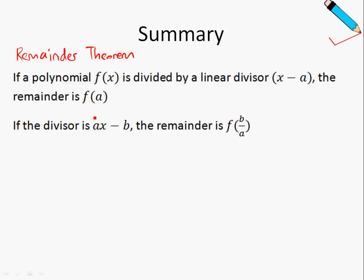If the divisor is ax-b, then the remainder is f(b/a). Let me remind everyone how we arrive at b/a. If we equate the divisor to 0 and shift the terms around, we will arrive at x=b/a, and this explains what is given here.